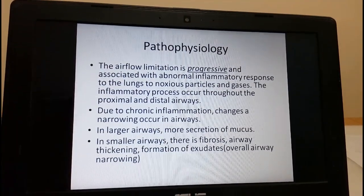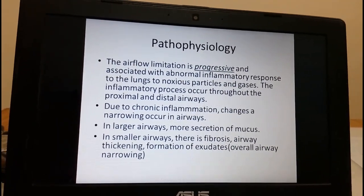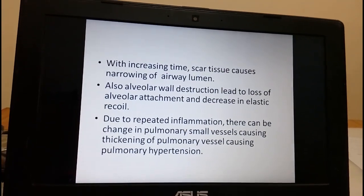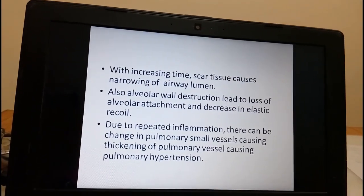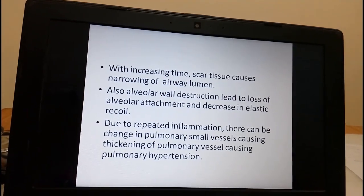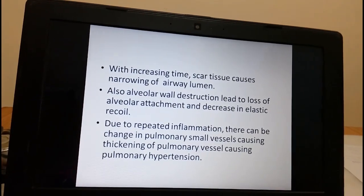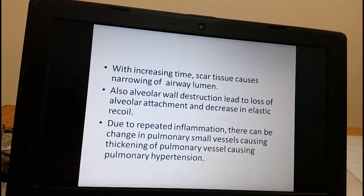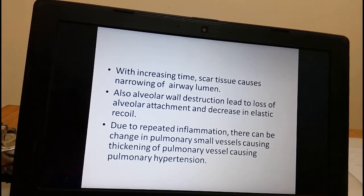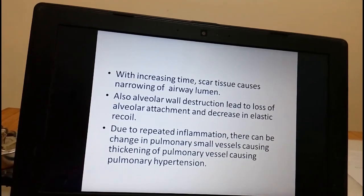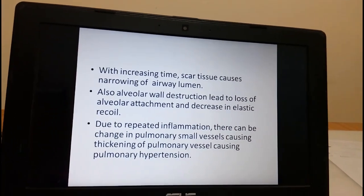In larger airways there will be increased secretion of mucus. In smaller airways there is fibrosis, airway thickening, and formation of exudates, causing overall airway narrowing. Over time, scar tissue causes further narrowing of the air lumen. Repeated inflammation also causes alveolar wall destruction, leading to loss of alveolar attachment and decreased elasticity of the alveoli. There can also be changes in pulmonary small vessels, causing pulmonary hypertension in cases of COPD.